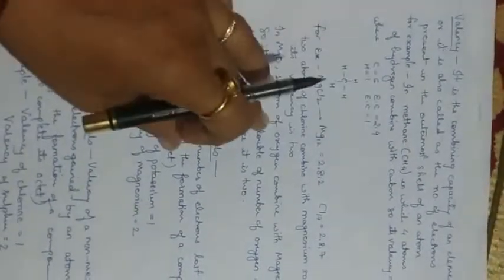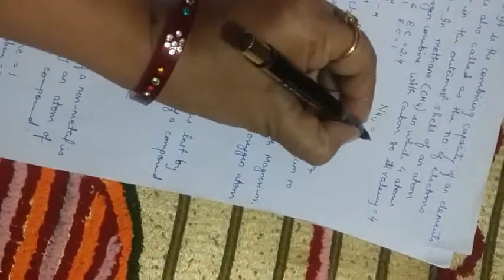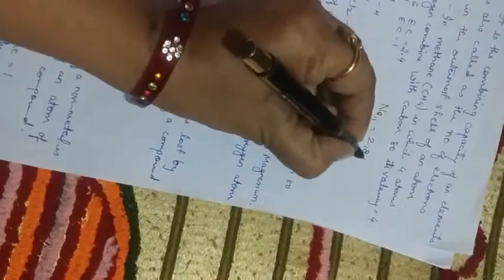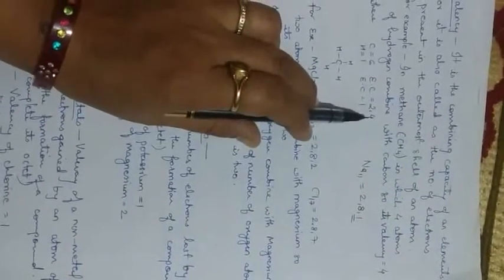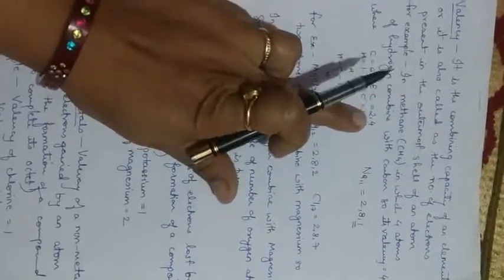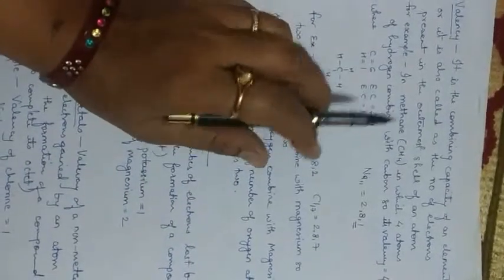For example, let us take sodium (Na), whose atomic number is 11, and its electron configuration (EC) will become 2,8,1. So 1 is the electron present in the outermost shell, and its valency will become 1. For example, carbon has atomic number 6; its EC will become 2,4. Here 4 is its valency — to complete its valency, it will gain 4 electrons or lose 4 electrons.